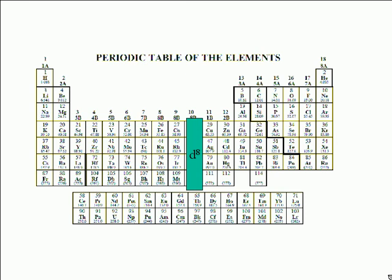For column 11, it's d9. And for column 12, it's d10. In other words, elements in column 12 have completely filled d subshells. You can see that cadmium belongs in this column.